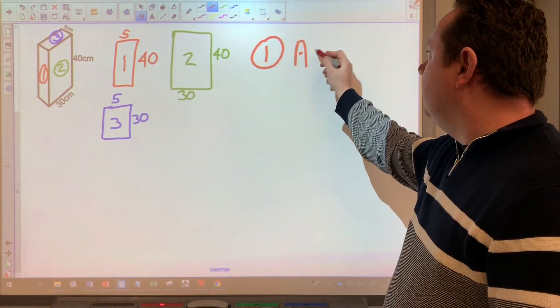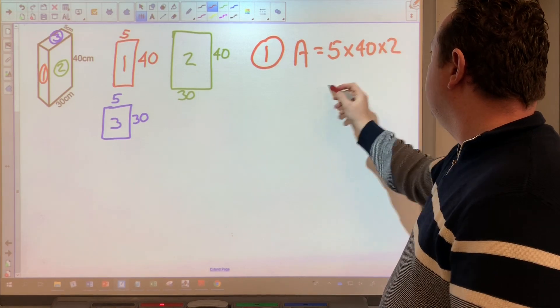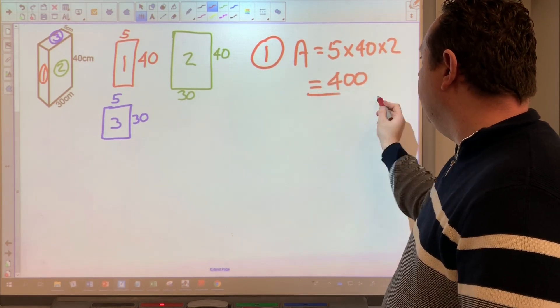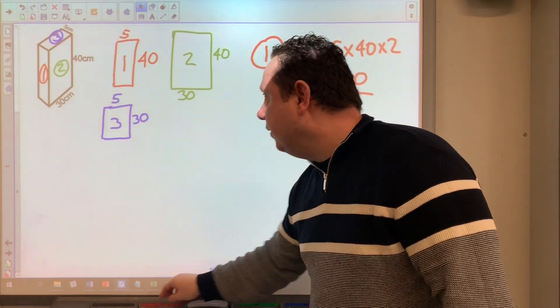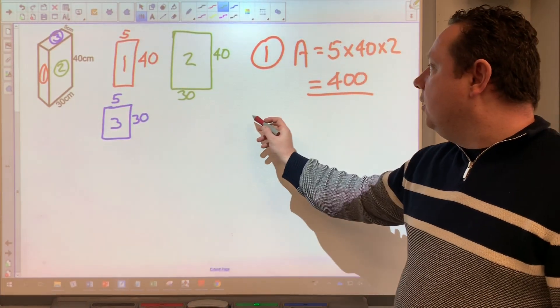The area of number one is five times 40. But I've got two of these. So that is 400. I'll leave the units to the end. The units are going to be all the same because they're all centimeters.